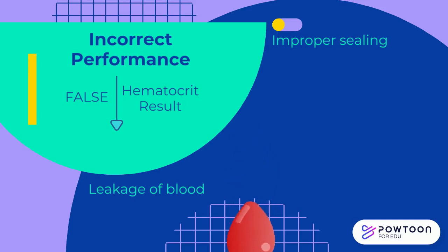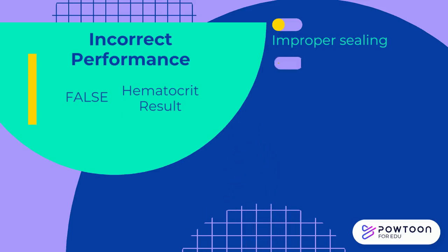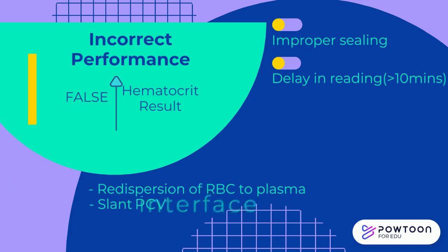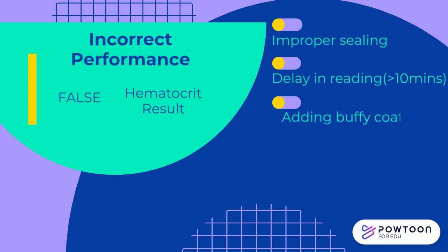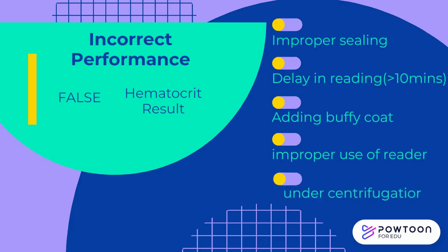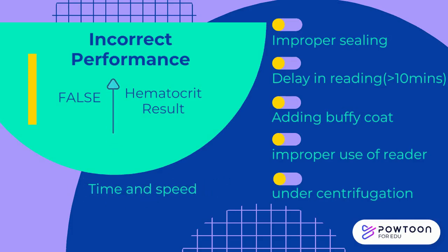Leakage causes red blood cells to be lost during centrifugation. A delay in reading, or failure to read within 10 minutes after centrifugation, causes an increased hematocrit reading, as redispersion of red blood cells into plasma causes slanting of the packed cell volume interface, giving a falsely elevated result. Including the buffy coat in the reading also gives a falsely elevated result. Incorrect use of the micro hematocrit reader may cause decreased or increased readings. Insufficient centrifugation causes a falsely increased result, as adequate time and speed are needed for maximum packing.